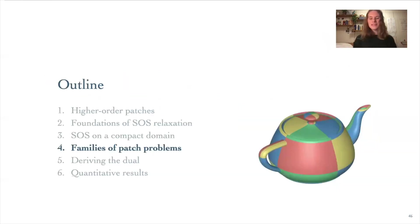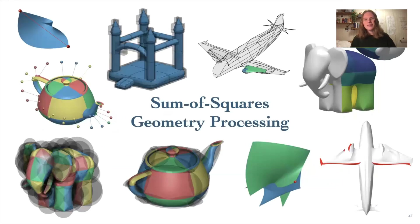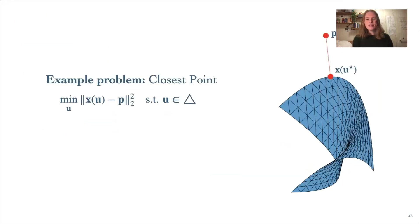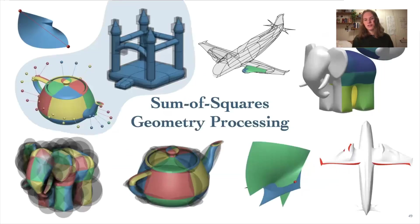Now we've seen the formulation of the closest point problem, and we can go back and look at all the other geometric operations on patches I talked about at the beginning, and now I'll discuss in general how to apply SOS relaxation to those ones too. I'll break the discussion of these problems into three general sections. To start, there's the problems that, like the closest point problem we've already seen, are formulated with a single point in our patch that we optimize over. In addition to closest point, the minimal axis-aligned bounding box problem also falls into this class, and we've already seen in general how you apply SOS relaxation to these.